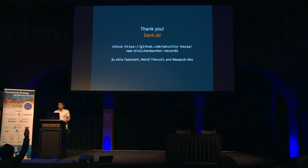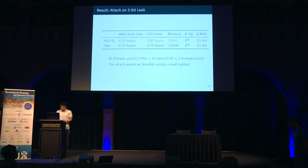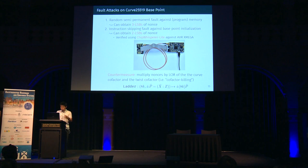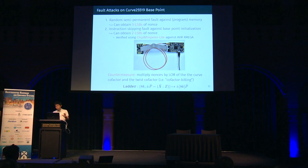We have some time for questions. Thank you for the nice talk. What kind of fault model did you assume? In the first fault model — the one revealing the 3 LSBs — we assumed an optical fault to induce a bit flip. In the second model, we used a clock glitch. The clock glitch was used to skip one instruction to set the X-coordinate of the base point.